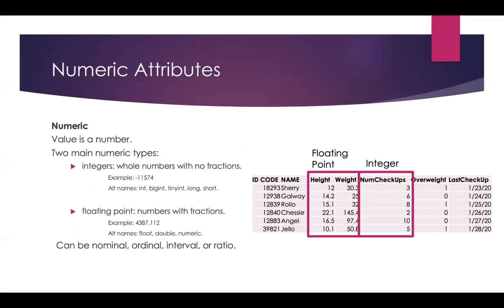Next up are numeric attributes. These are where the value in the field will be a number. We have two main types of numeric attributes: integers and floating points. You might remember integers from a math class in your past. These are whole numbers, no fractions or decimals. For instance, number of people in a county has to be a whole number. You can't have half of a person. In the case of my example on this slide, we have the number of checkups for these pets.